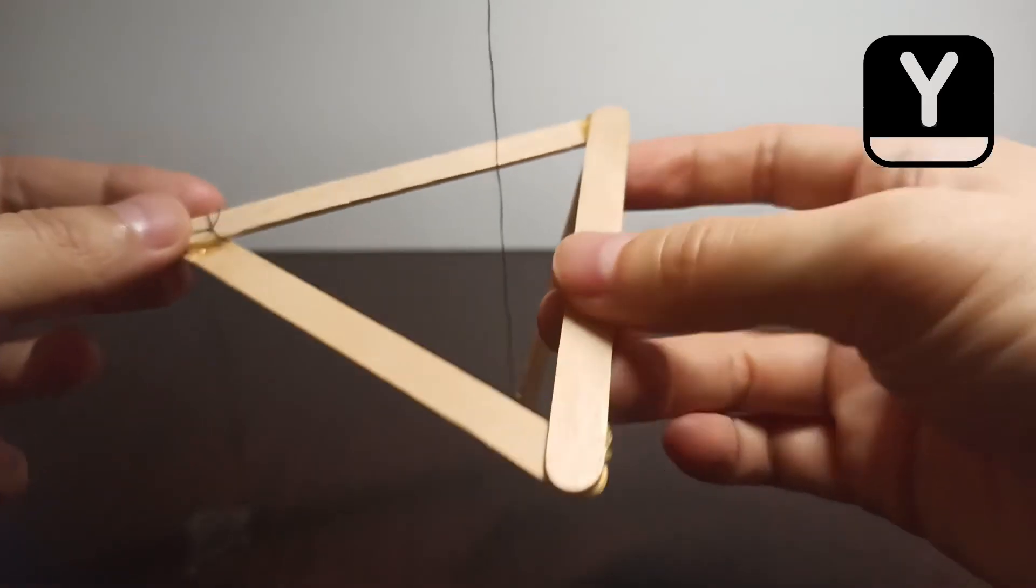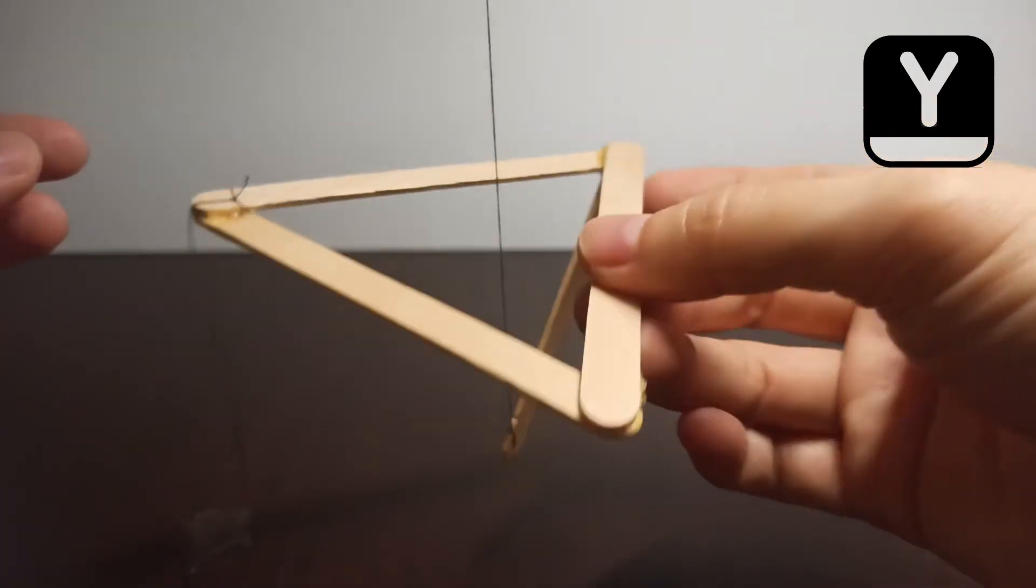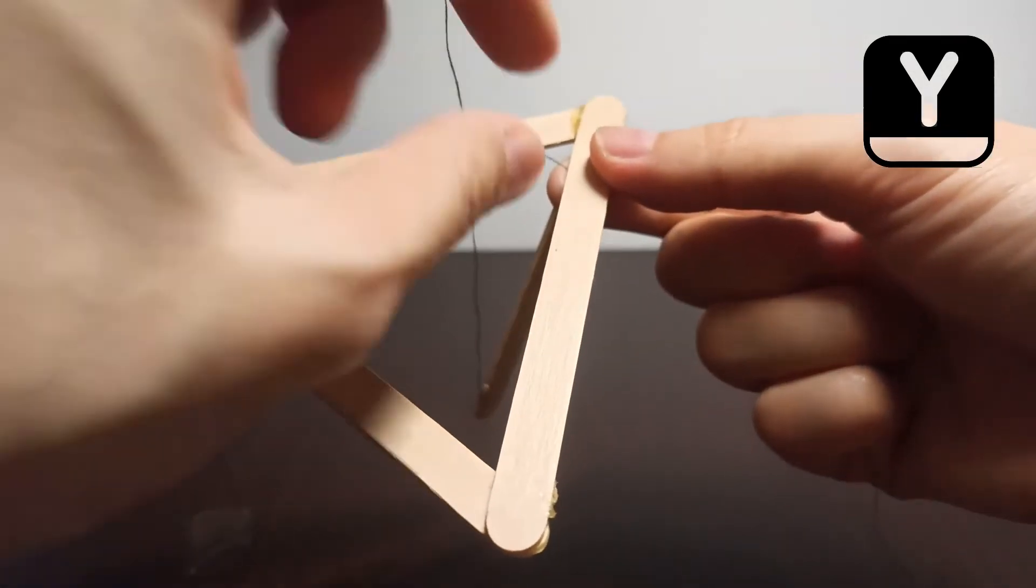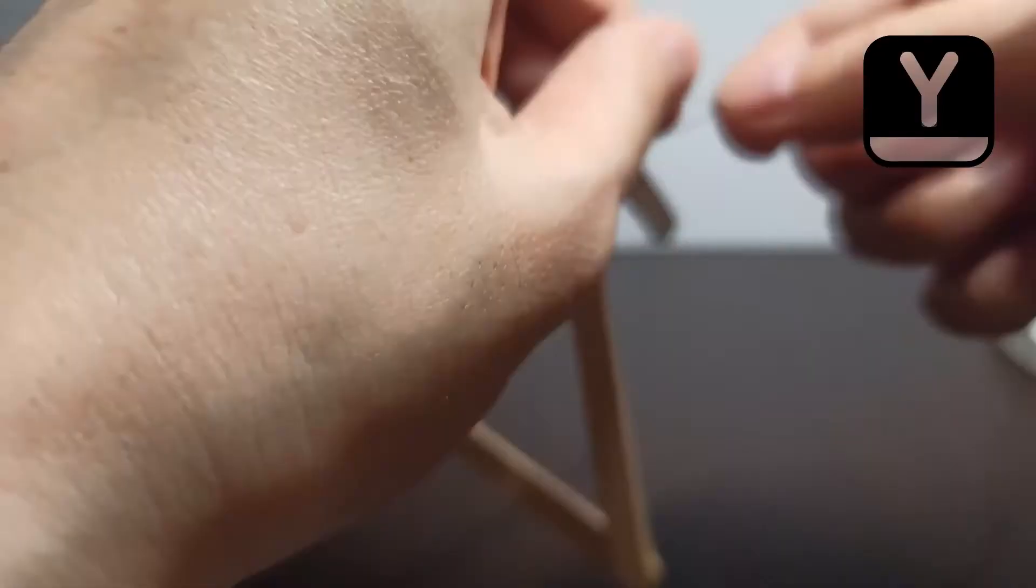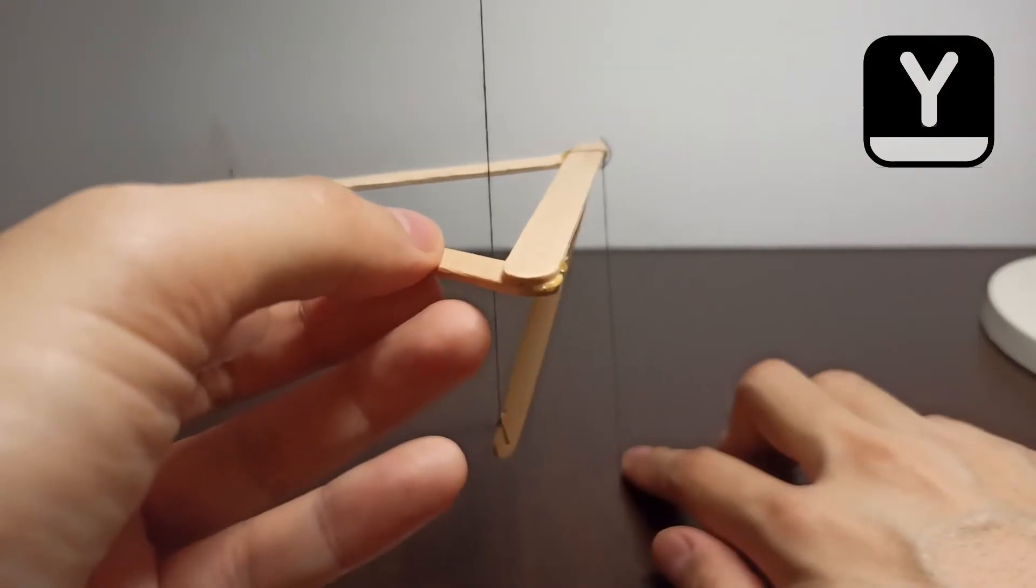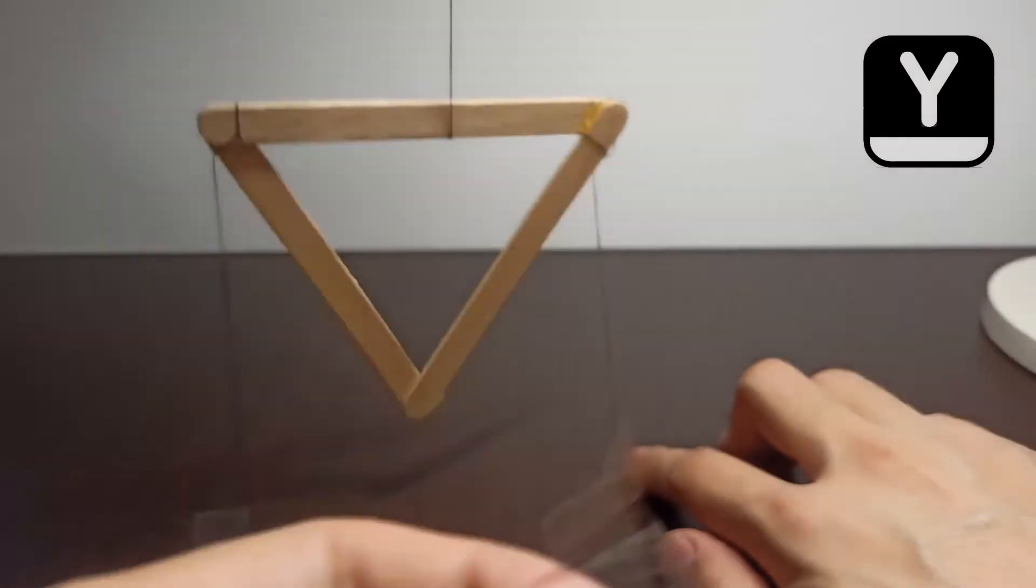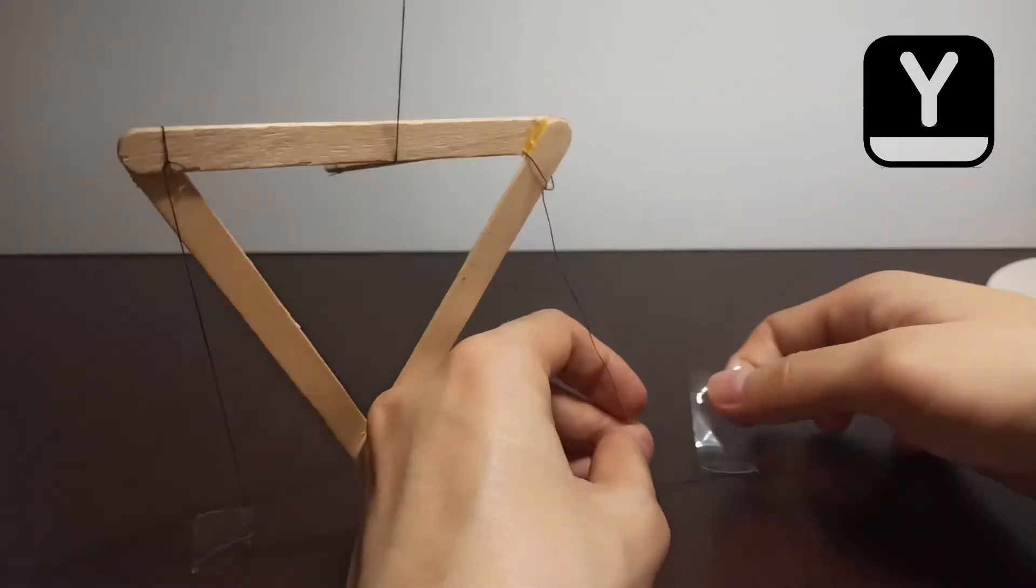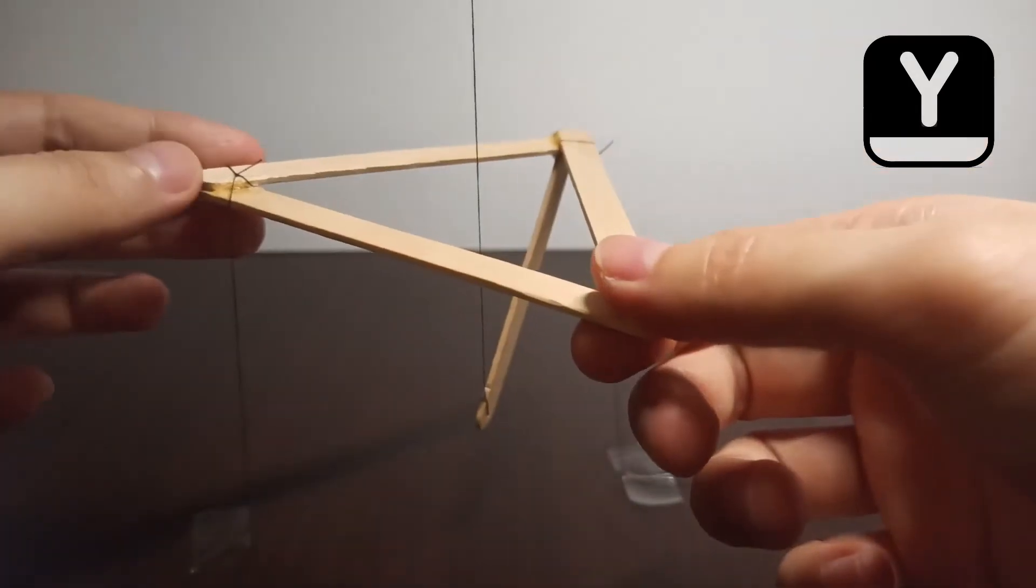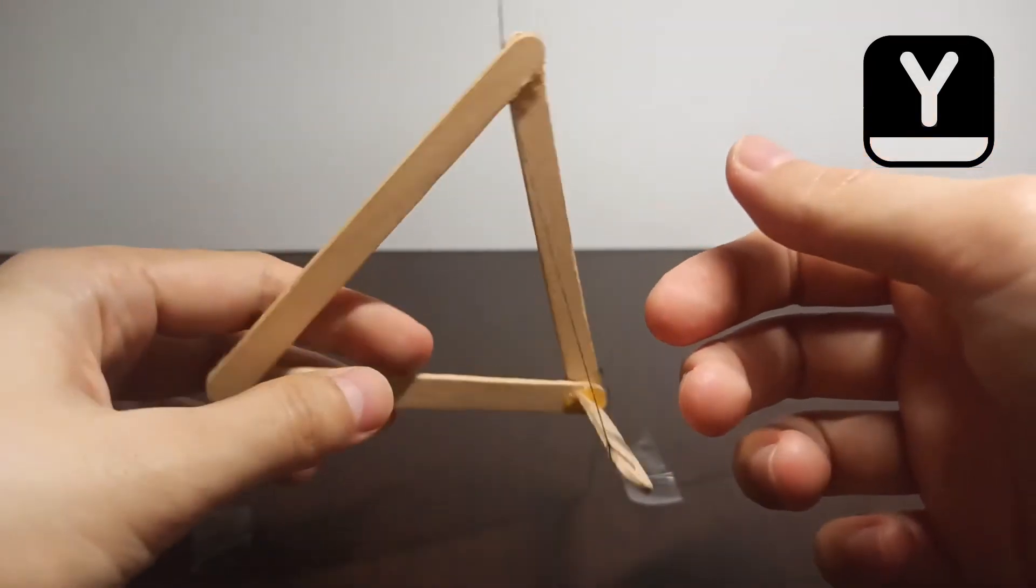So to further restrict its movement, let's tie a string to another corner at the back. Same here, hold down the string with a piece of tape. Now it will not tip over to the front, only to the back.